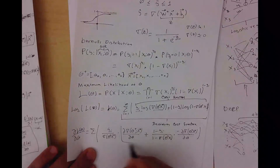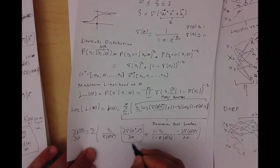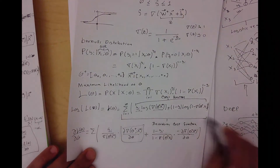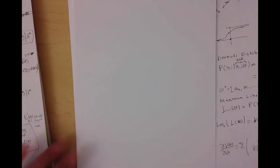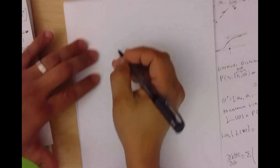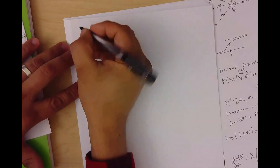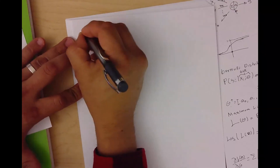Let's compute this part now just to see what is going on. We take the derivative of the sigmoid function with respect to the input.